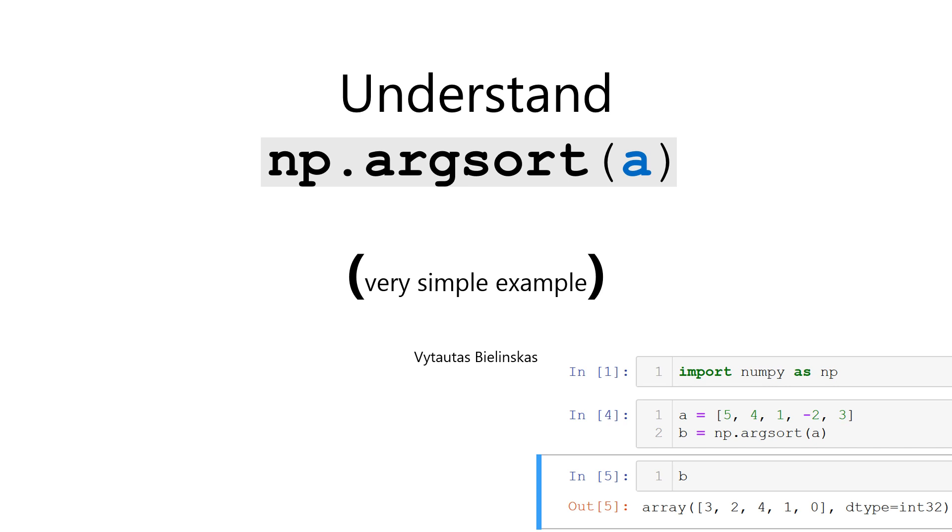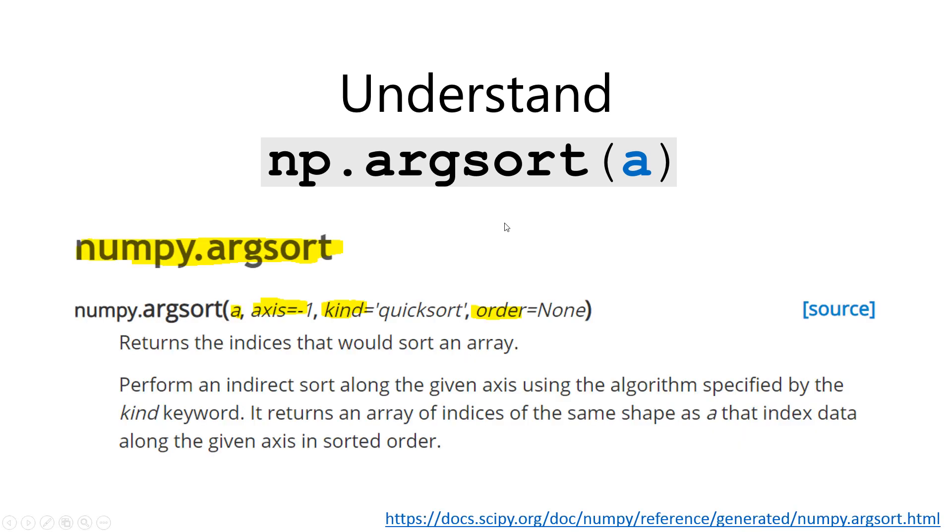Let's start with the official description from NumPy documentation. The documentation tells us that this function returns the indices that would sort an array. We perform an indirect sort along the given axis using the algorithm specified by the kind keyword. It returns an array of indices of the same shape as variable a that index data along the given axis in sorted order.